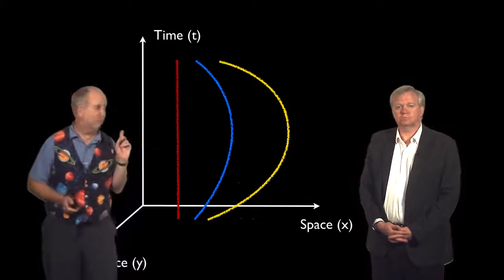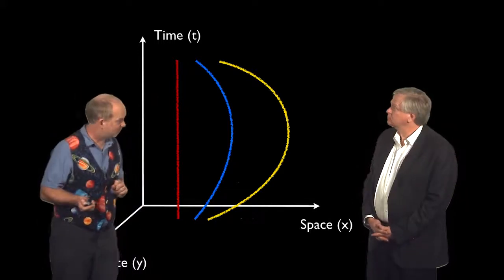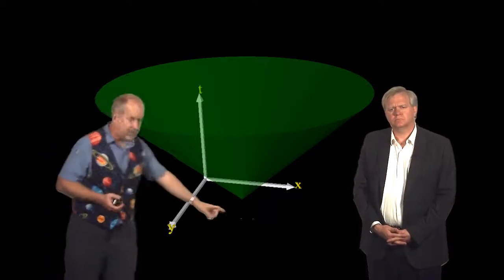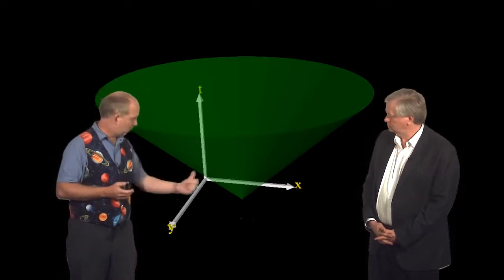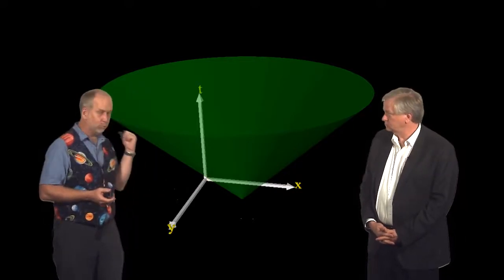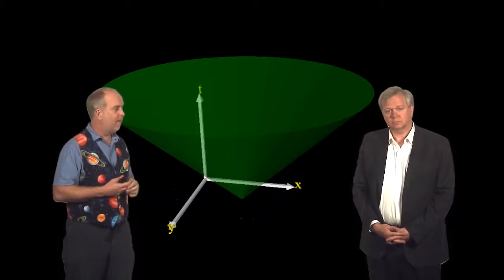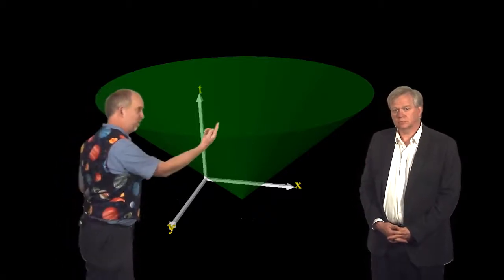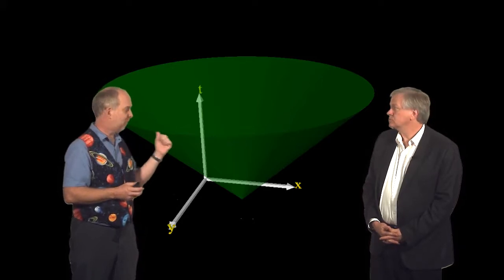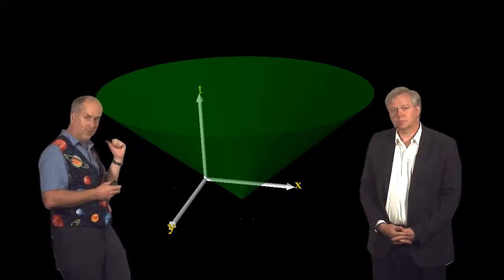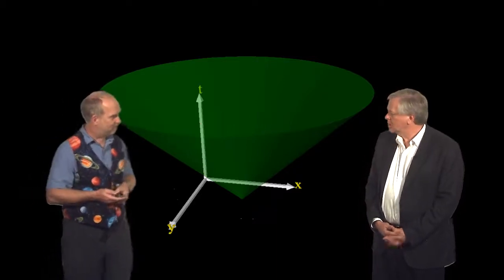And that leads to the idea of the fastest thing of all, light. Let's say there's an event down here at the bottom of the cone, and it flashes out light in all directions. Light will be going at a 45-degree angle in this thing, if you scale the coordinates correctly. So there'll be a cone, which is where the flash is, a hollow cone. If you're anywhere on this cone, you will see that flash. If you're further out, the flash won't have reached you yet. If you're further in, the flash went past some time in the past.